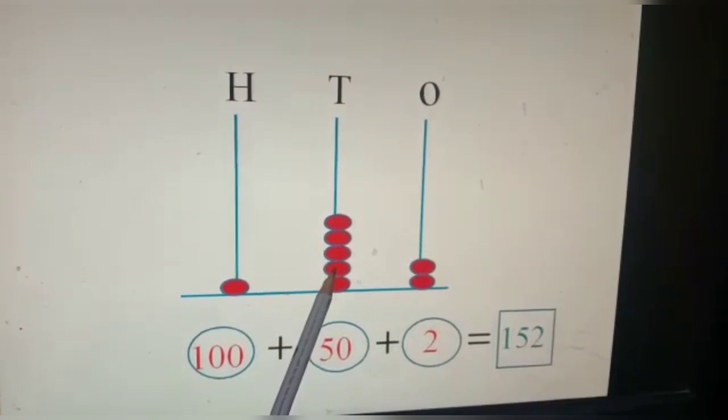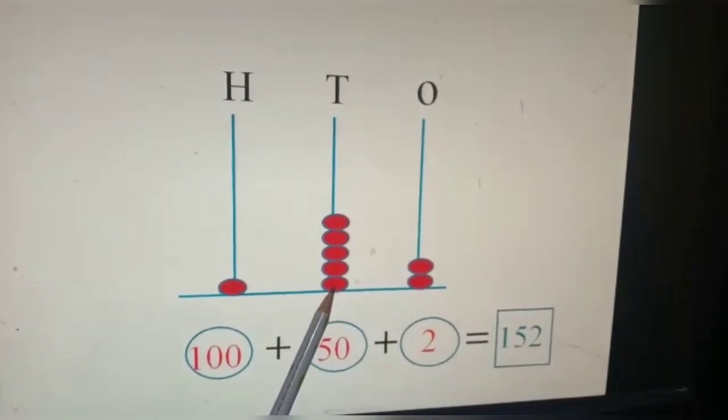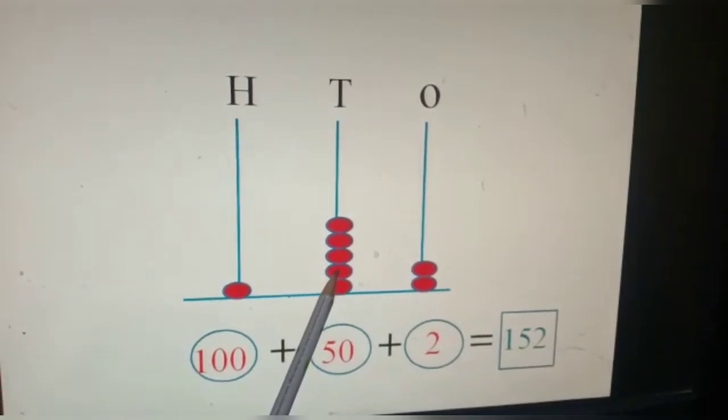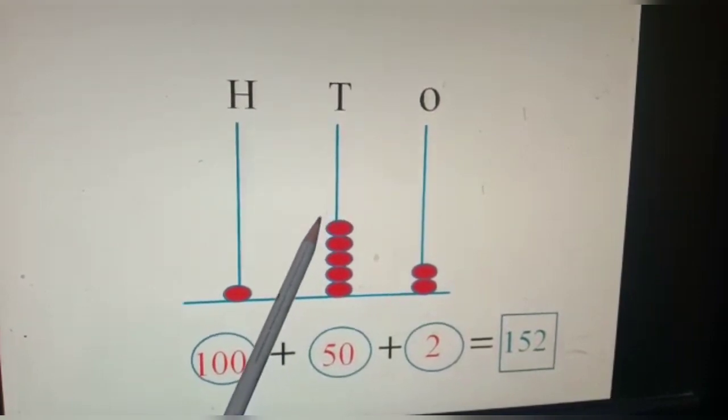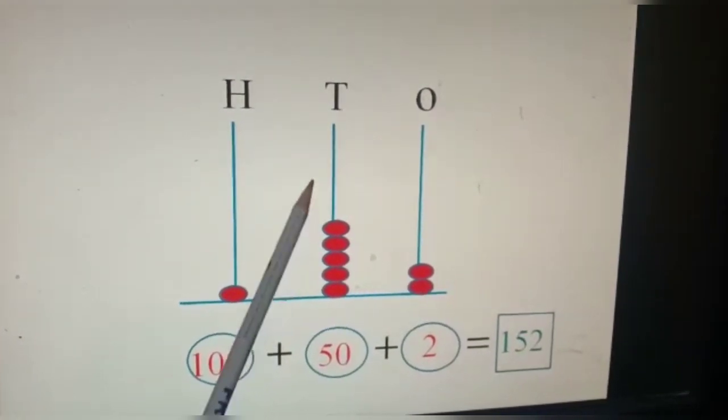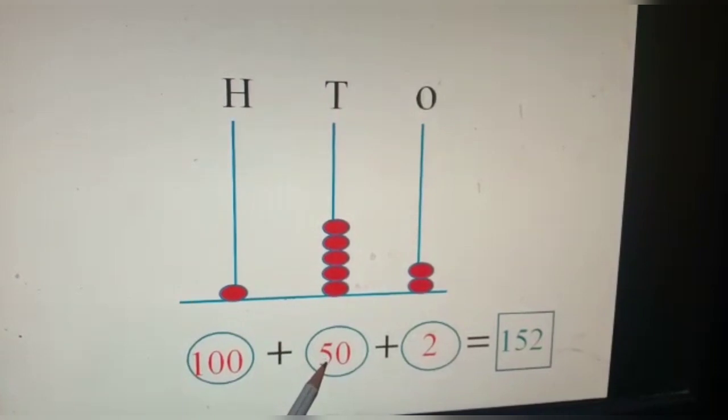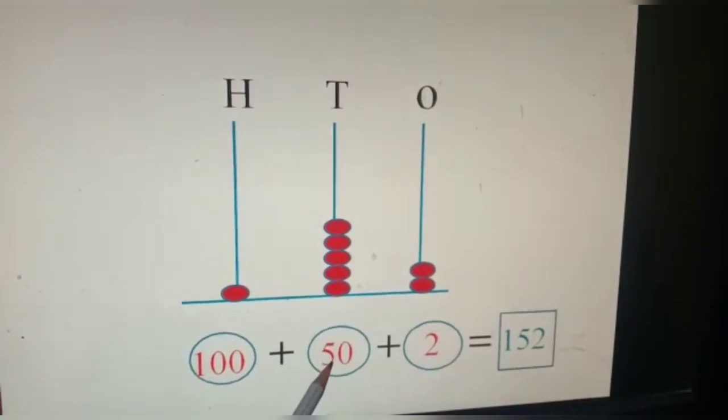In the tens place, one ten is ten. Then, two tens, twenty, three tens, thirty, four tens are forty, and five tens are fifty. So, we write fifty in the tens place.